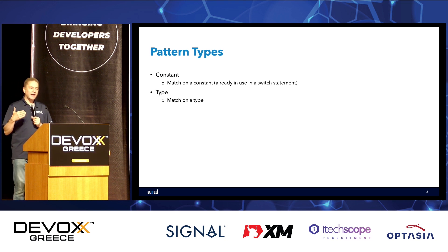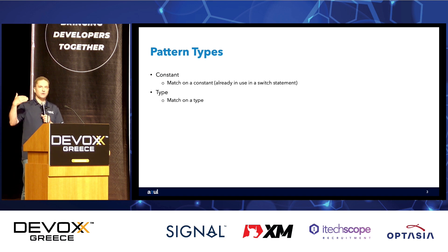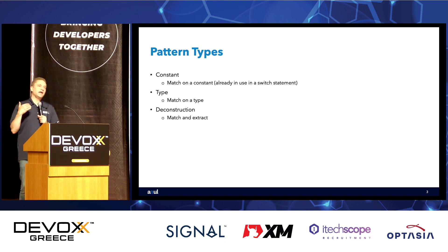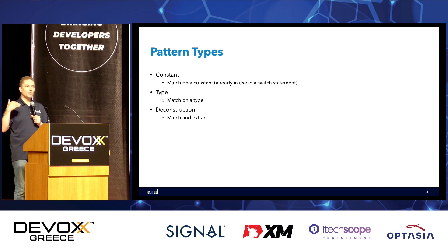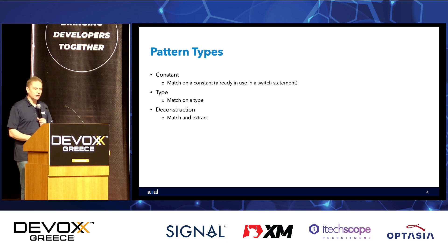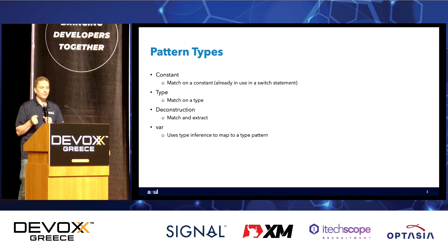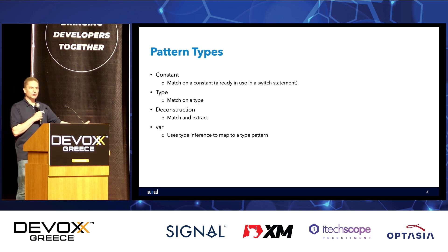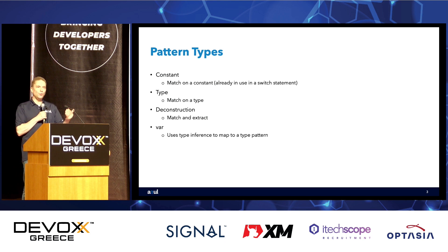When it gets more interesting is when we have a type pattern — matching on a particular type or class in Java. We can take that further with a deconstruction pattern, which not just matches on a type but can extract information out of it. Then there's the var type pattern, which uses type inference. JDK 10 introduced local variable type inference, giving us the ability to use `var` as a keyword rather than explicitly stating the type.